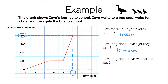The third question asks how long Zane waits for the bus. Waiting for the bus corresponds to the flat section of the graph where he's not moving and stays the same distance away. He starts waiting five minutes after leaving home and finishes waiting eight minutes after leaving home, so he waits for three minutes — the difference between eight and five.